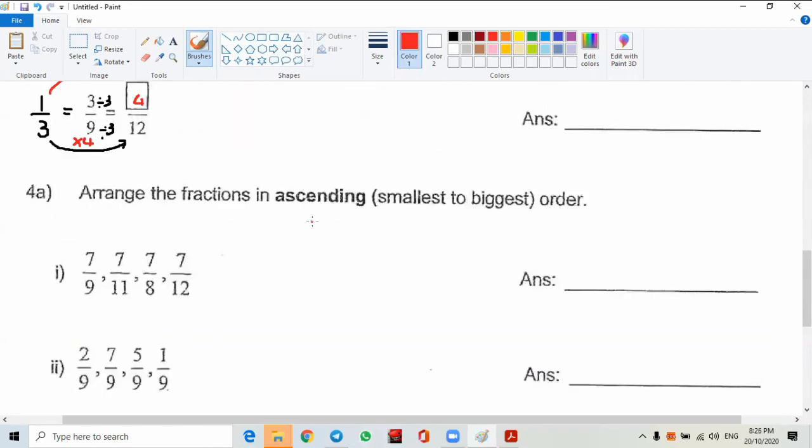Arrange in ascending order. That means from small to big. No need to convert. You think about it. You have 7 pizza eaten by 12 people, 7 pizza divided by 8 people. Who gets the bigger share? The fewer the people, the bigger the fraction, isn't it? So which one should be the smallest? 7/12 should be the smallest.